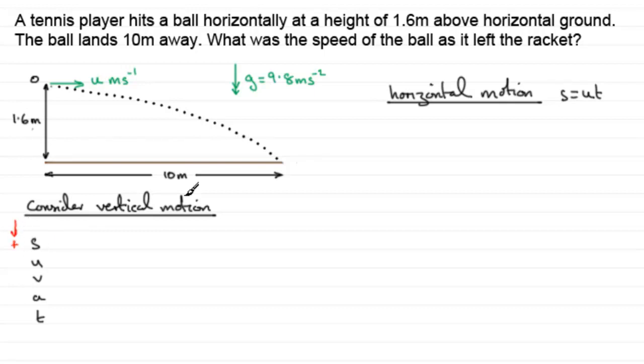So what is s? s is displacement. What is that displacement over this period of time? Well, in the vertical sense, it's plus 1.6, so 1.6 meters there. The initial downward velocity, well, it's zero at the start. There's no component of u downwards, so that will be zero. As for the final velocity, when it comes down here, we don't know that.